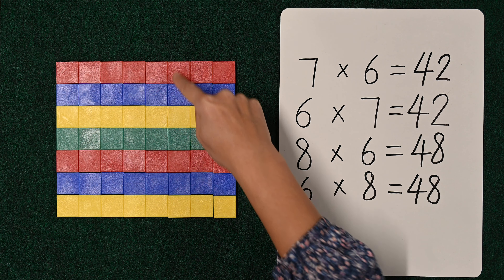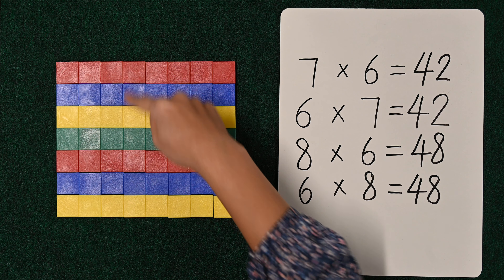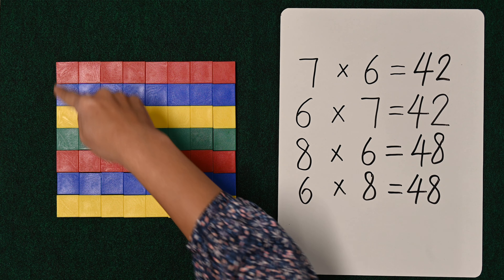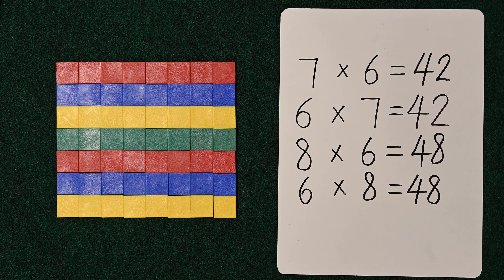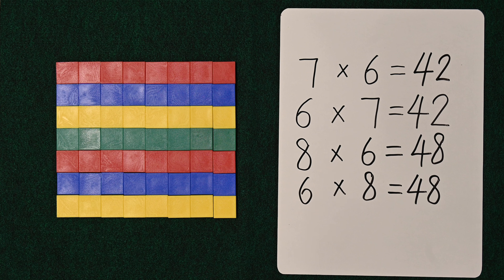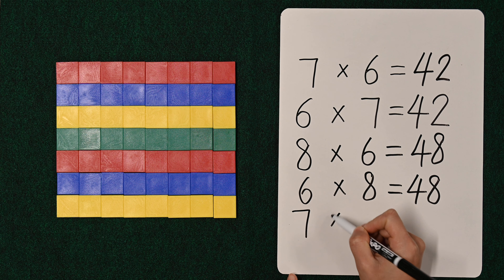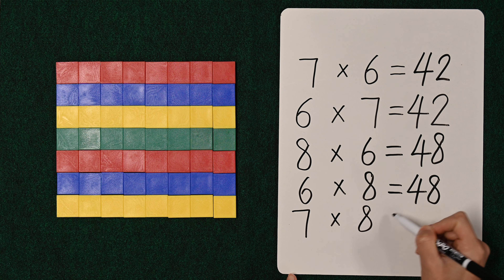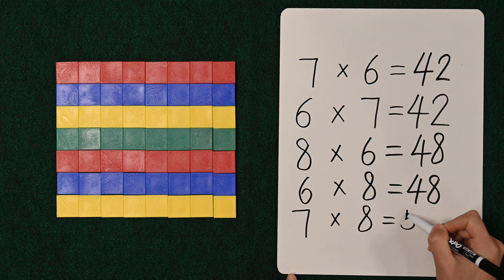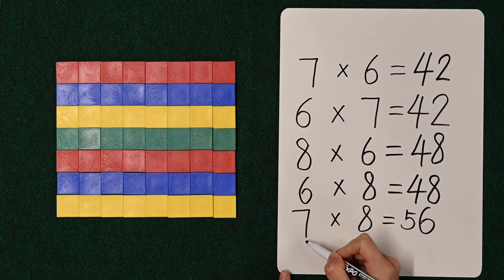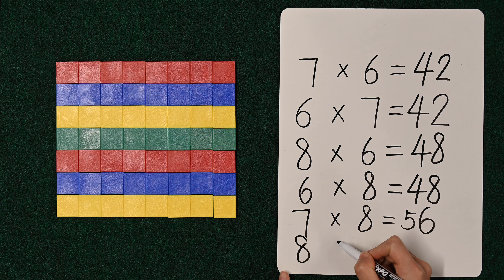Let's count by sevens just to make sure. Seven, fourteen, twenty-one, twenty-eight, thirty-five, forty-two, forty-nine, and fifty-six. It's the same! I know those numbers because I remember to remember. So always make sure, and once you know that that's the answer, please remember to remember that seven times eight equals fifty-six. And eight times seven is also fifty-six.